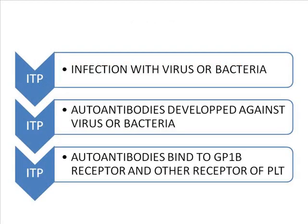I will now explain the pathogenesis of ITP. If you understand the pathogenesis, it is very easy for you to treat ITP. Just follow the flowchart to understand ITP. Once there is infection with a virus or bacteria, our body will produce antibodies as a protective mechanism. If it is a normal antibody, it should act against the virus or bacteria only.